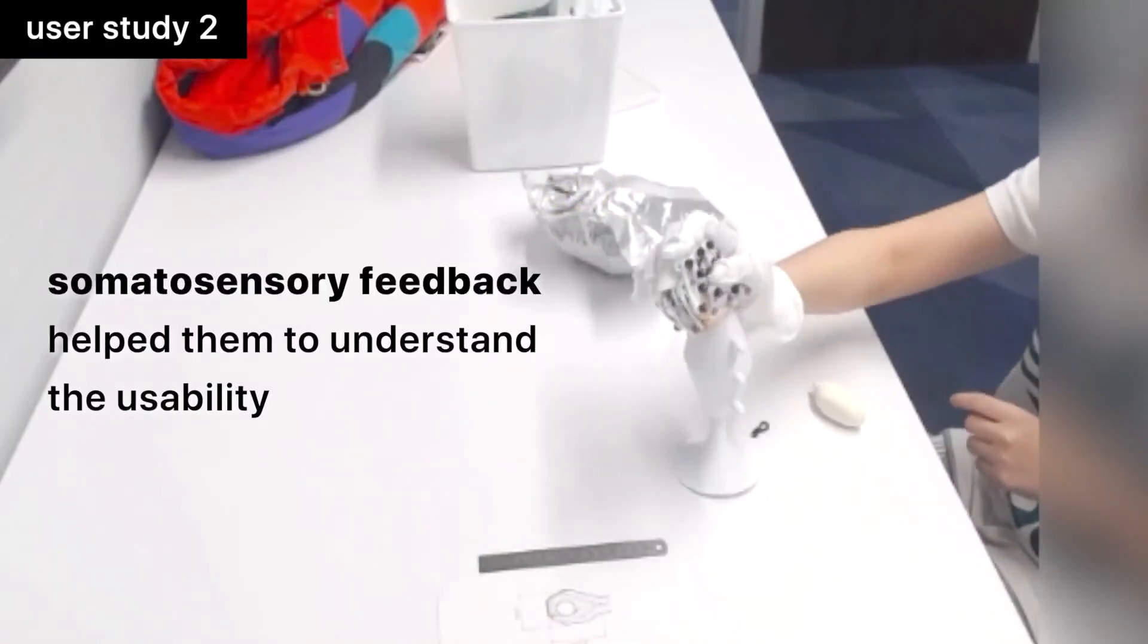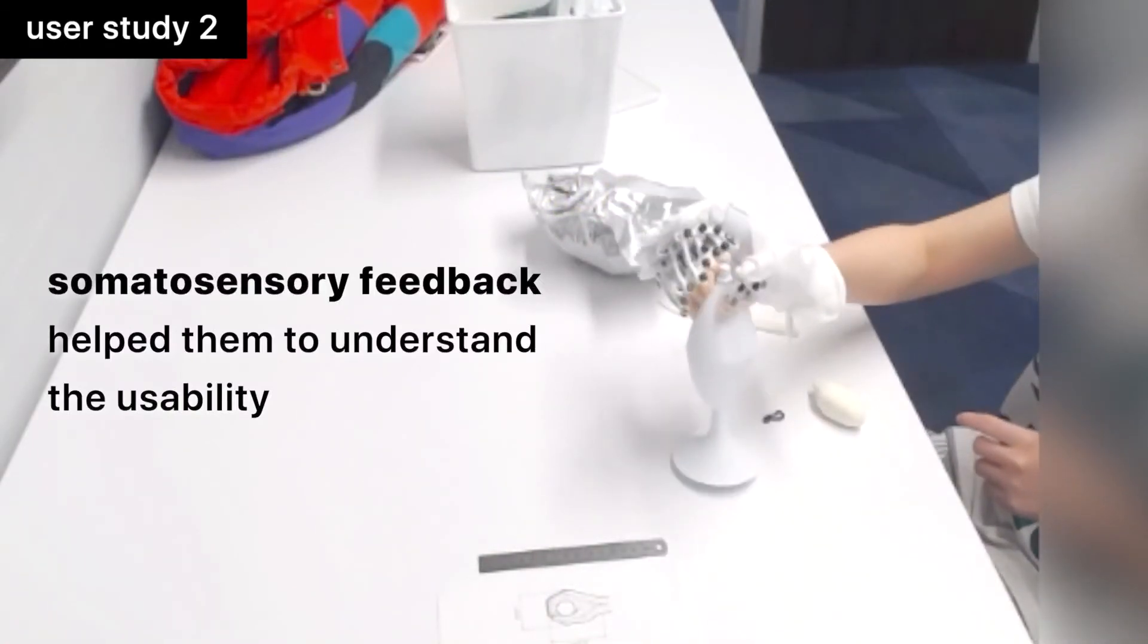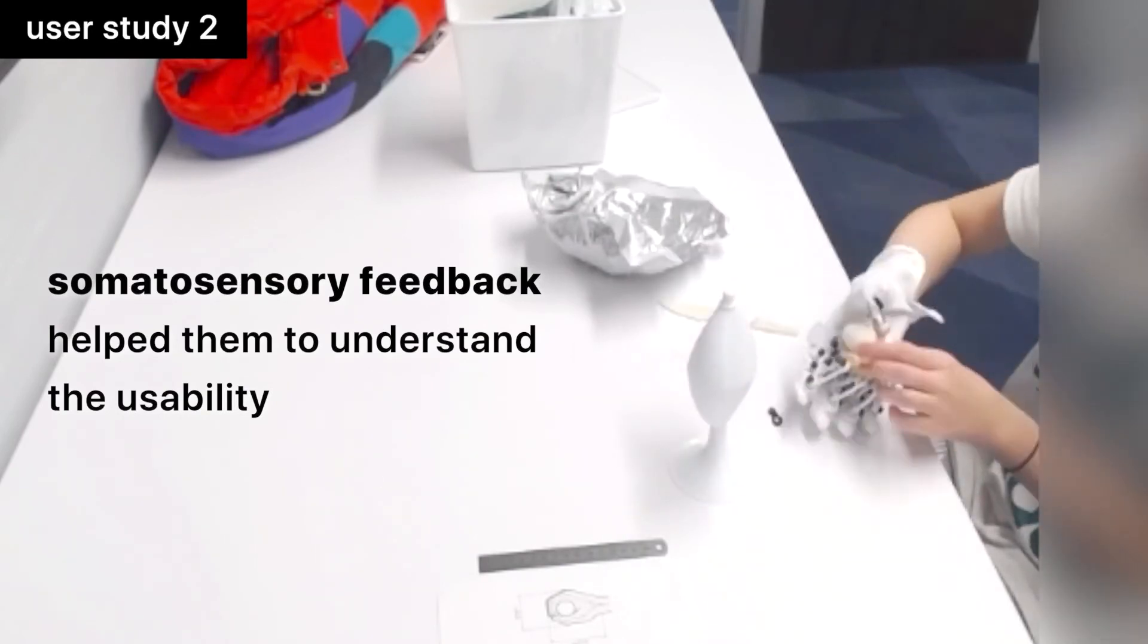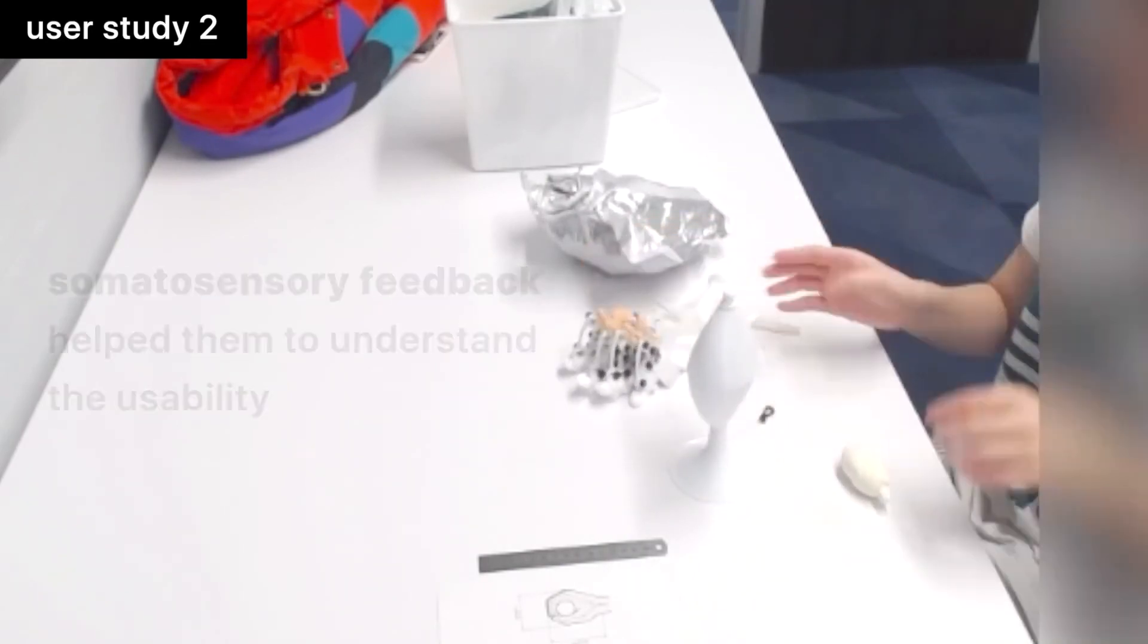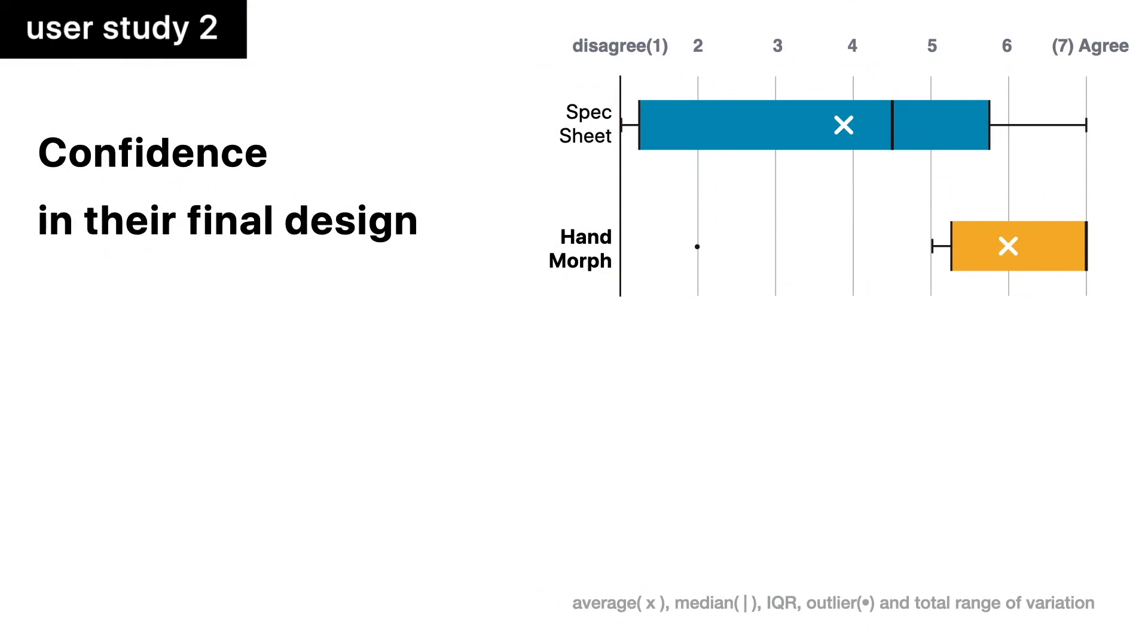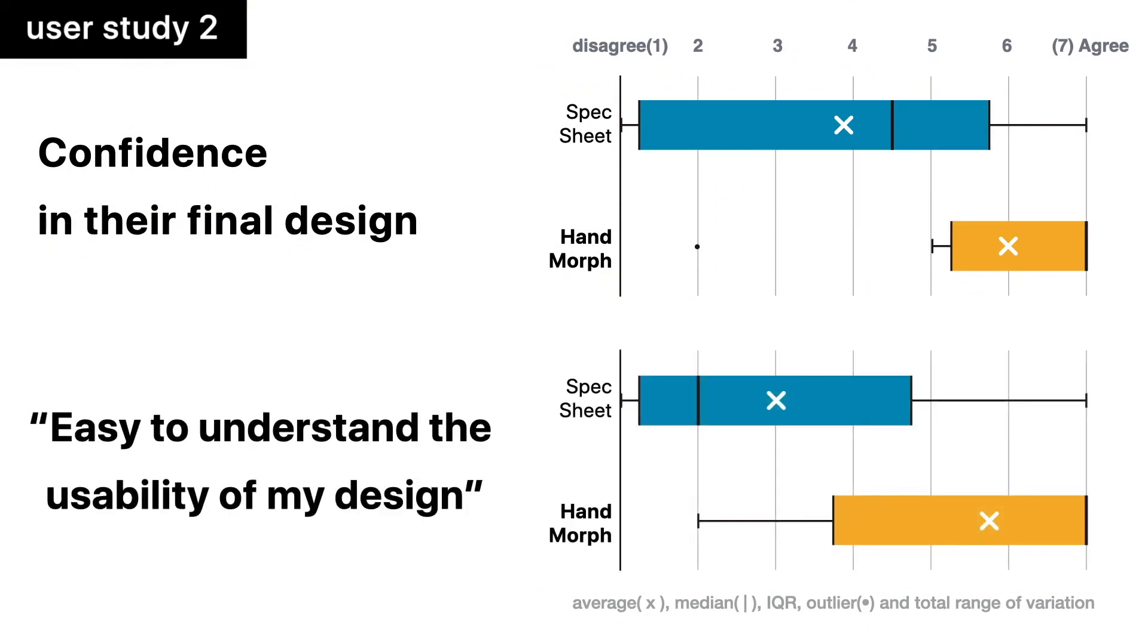Somatosensory feedback helped them to understand the usability of their design. A post questionnaire revealed that the confidence in their final design and the understanding of the usability has improved by the use of Hand Morph.